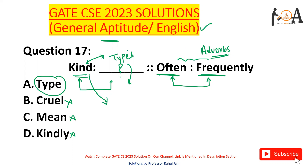So option A, that is 'types', matches much more closely to 'kind' in the same sense that 'often' and 'frequently' match with each other. I hope this question is clear to everyone.